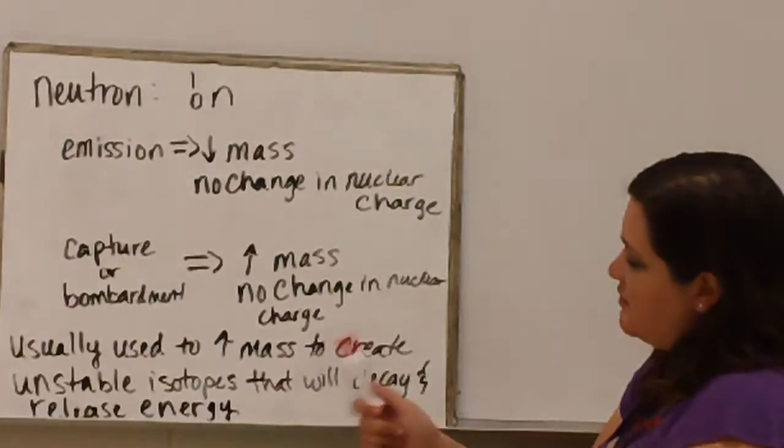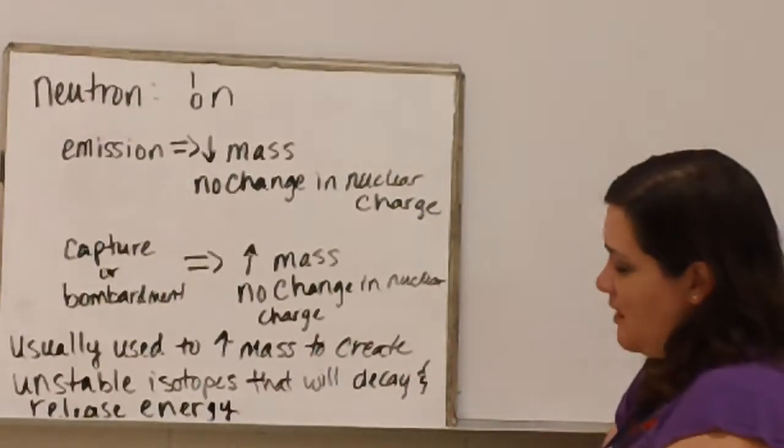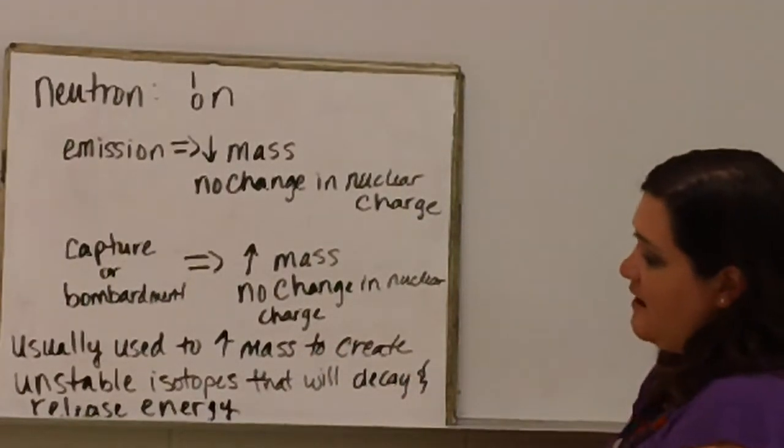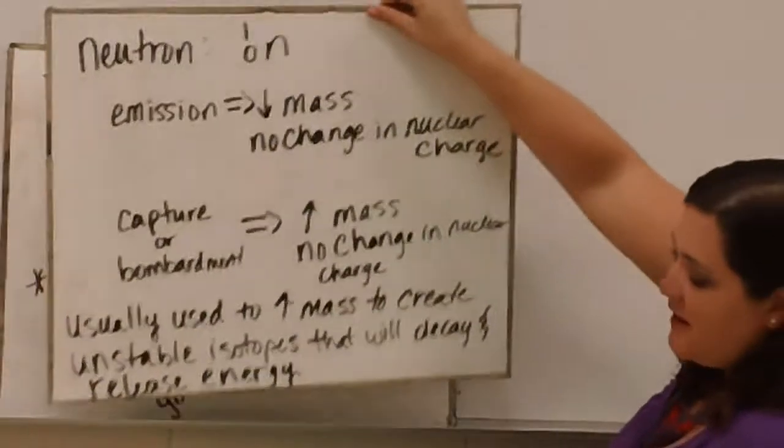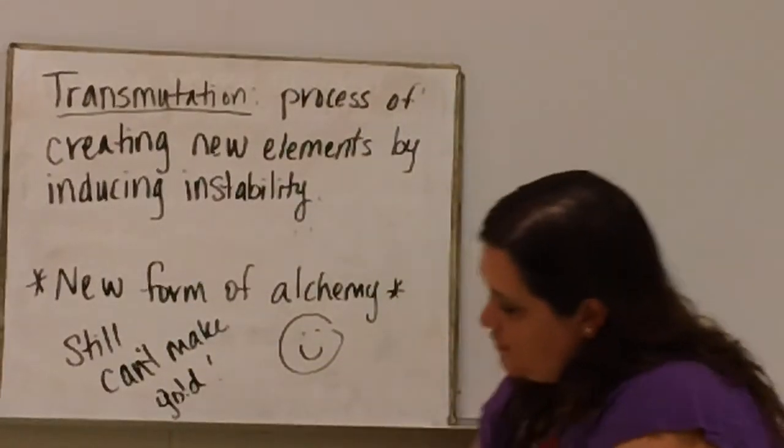Neutrons are usually used to increase the mass to create unstable isotopes that will decay and then release energy. That is the basic purpose of how a nuclear reactor works.